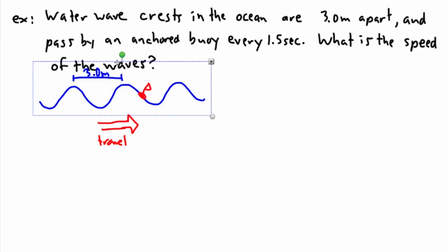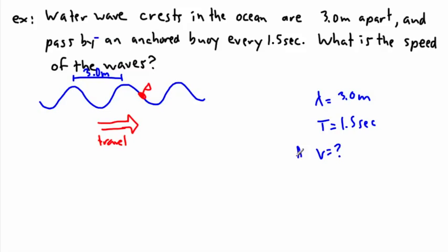The question is, what's the speed of the waves? What quantities do we know? If we look at this, the water wave crests are 3 meters apart. That is the unit of distance, so that would be the wavelength. So now we know the wavelength is 3.0 meters. And they hit every 1.5 seconds. If they hit every 1.5 seconds, that is a unit of time. What they're really telling us is that's the period. So we know that the period is 1.5 seconds. And they're asking for the speed of the wave. In other words, we want V.